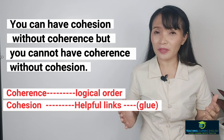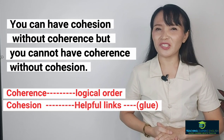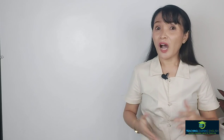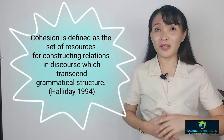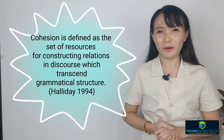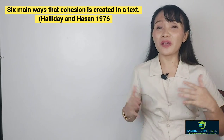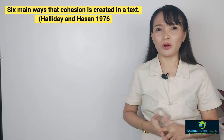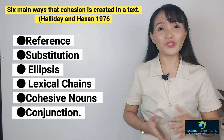In general, you can have cohesion without coherence, but you cannot have coherence without cohesion. Since we cannot achieve coherence without cohesion, we will discuss first how to write a cohesive paragraph or composition. Cohesion is defined as the set of resources for constructing relations in discourse which transcend grammatical structure — that's according to Halliday in 1994. According to Halliday and Hassan, there are six main ways that cohesion is created in a text.